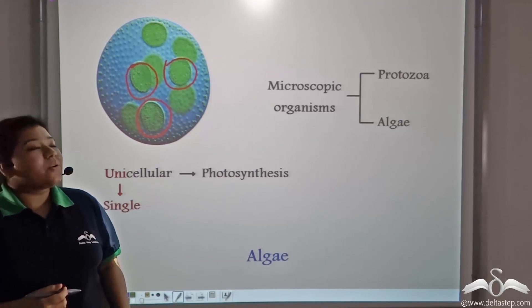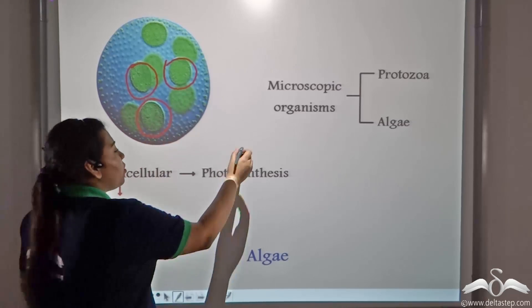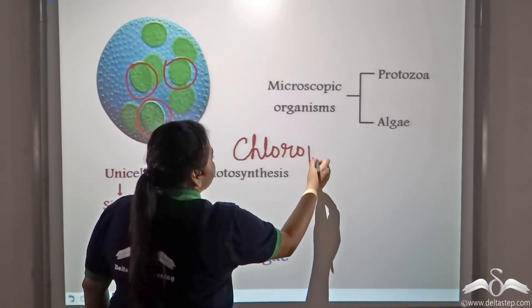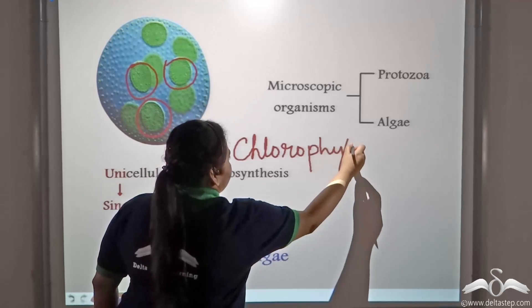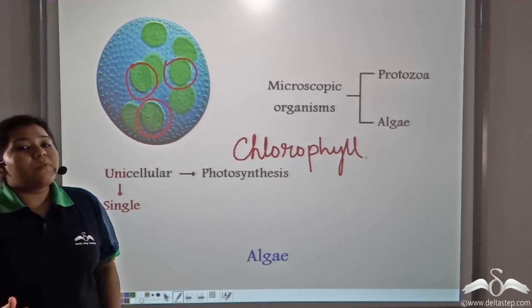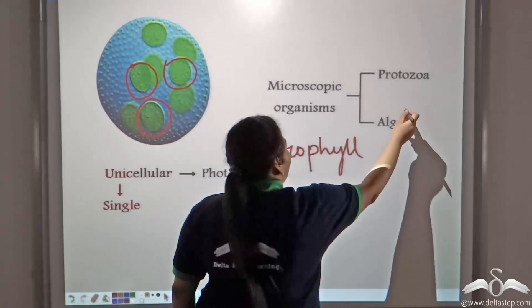These microorganisms contain the green pigment known as chlorophyll and so can perform photosynthesis. This group of living organisms that contains chlorophyll is known as algae.